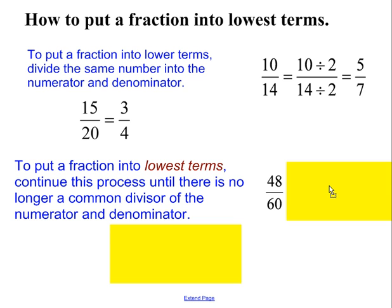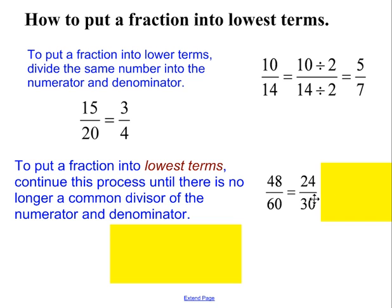In the next example, I start with 48 over 60. I notice that is an even number over an even number, so I divide top and bottom by 2, and I get 24 over 30. However, this fraction is not in lowest terms. To put a fraction into lowest terms, continue the process until there is no longer a common divisor of the numerator and denominator. Both of these numbers are even, so I can divide top and bottom by 2, giving 12 over 15. These two numbers have a common divisor of 3, so my final answer is 4 fifths.